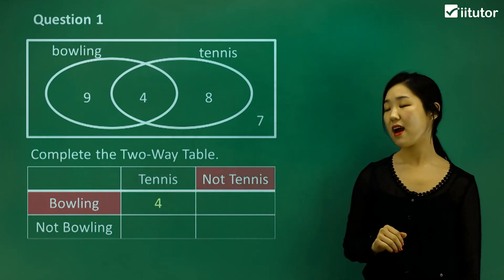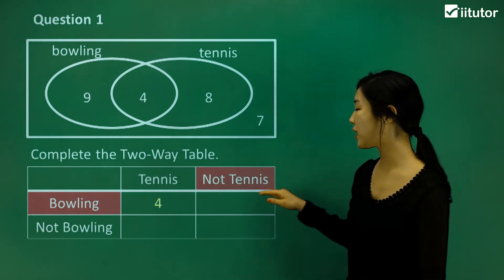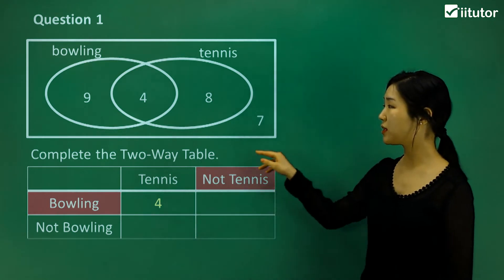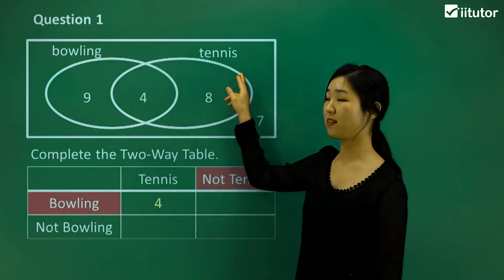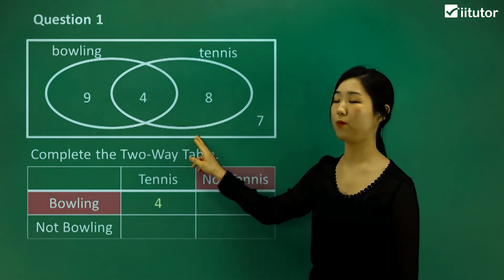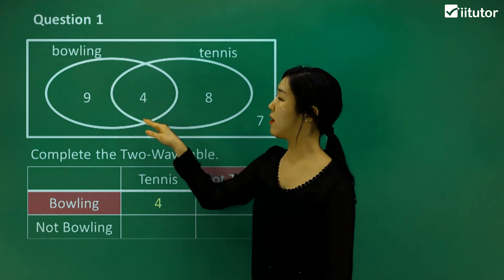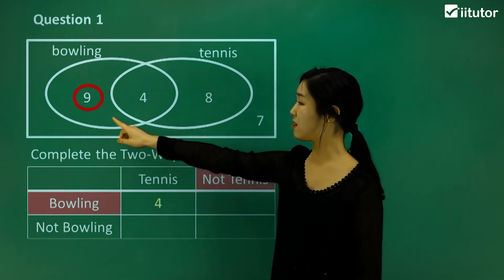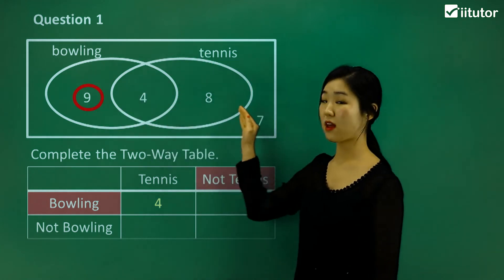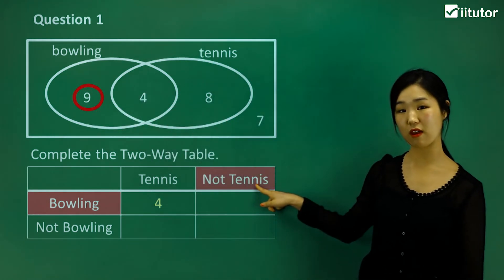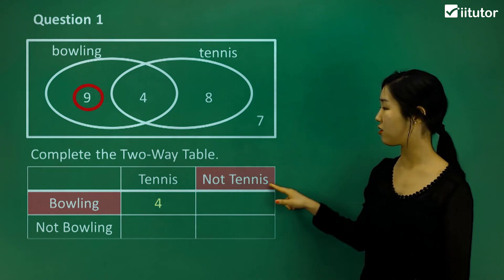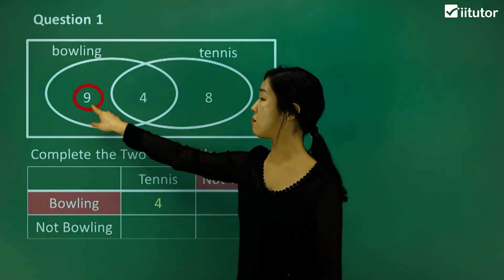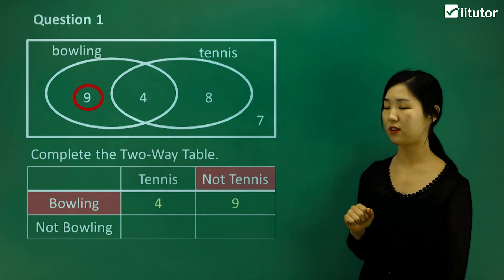Next, I'm going to find the number of people doing not tennis but does bowling. If they're not doing tennis, it shouldn't be inside the tennis circle at all. Out of the bowling ones, the people who don't do tennis are the nine — nine is not in the circle of tennis, but it satisfies the bowling category. So nine is filled into that box.